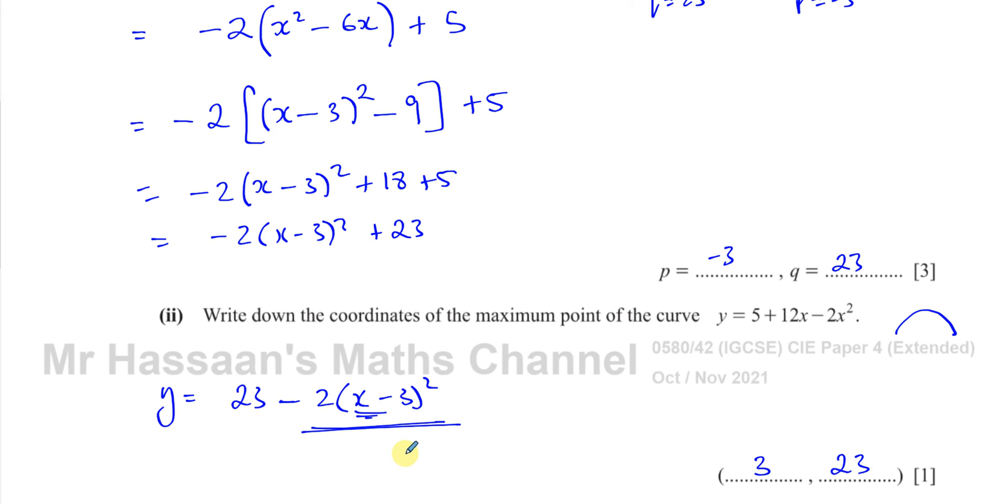So whenever you're writing the vertex, basically, some people memorize it. But it's good to understand why. It's always going to be the x value which makes the bracket 0. So it's always the opposite of this number. So if this is -3, this will be 3. And then what's left behind when the bracket becomes 0 is the y value of the vertex.